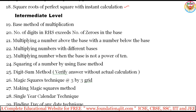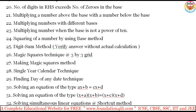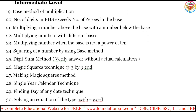When you come to the intermediate level, here are the topics from 19 to almost 33. Compared to the previous one, there is the Vedic method of multiplication, number of digits in RHS exceeding the number of zeros in the base, and most of the content here involves multiplications and the digit sum method. Also included are the magic square technique, 3x3 grid magic square, making magic squares method, single year calendar technique, and finding the day of any date technique, along with some other concepts.